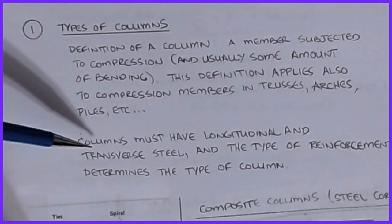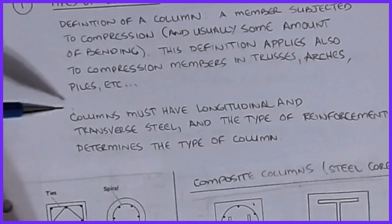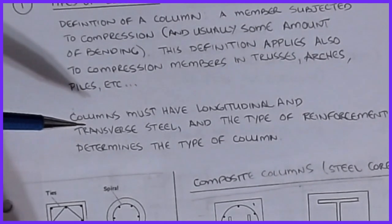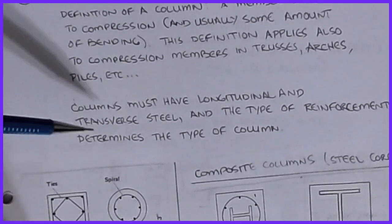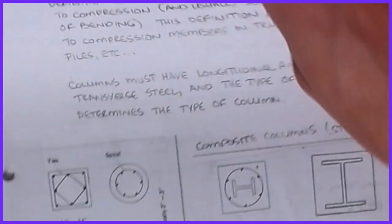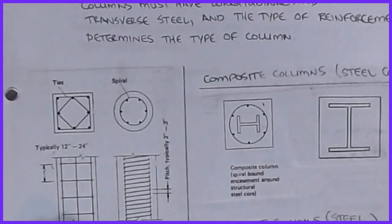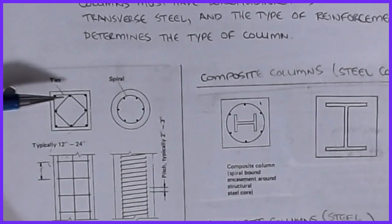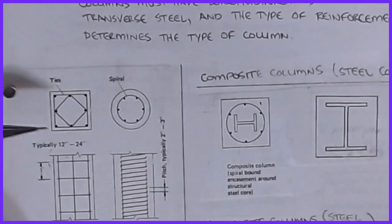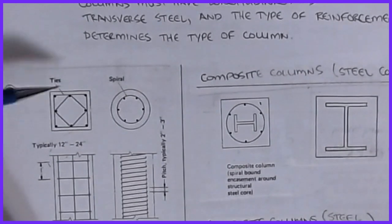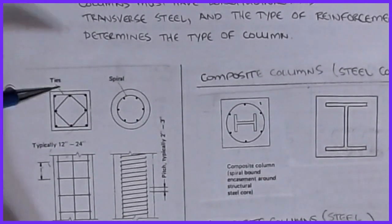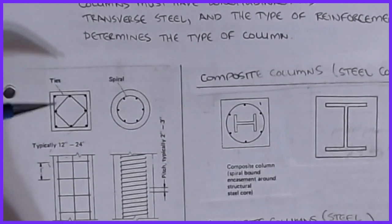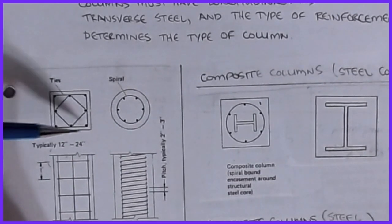For our purposes, the textbook definition of a column requires both longitudinal and transverse steel, and the type of reinforcement determines the type of column. The first type is what we call a square tied column — a square cross-section. A column, like any reinforced concrete shape, can be round, square, star-shaped, or anything else given the proper forms.